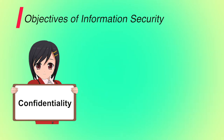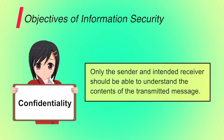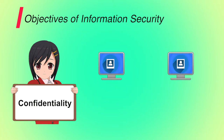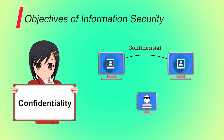First is confidentiality. It means to control or restrict access of critical or sensitive information to an individual. Loss of confidentiality is the unauthorized disclosure of information. For example, if you are sending your picture to your friend, then it should be confidential between you and your friend. If any other person is doing eavesdropping during your and your friend's communication, then it breaks the confidentiality of the message.